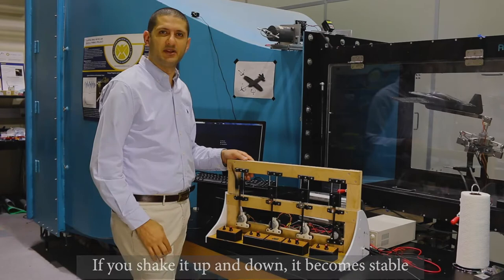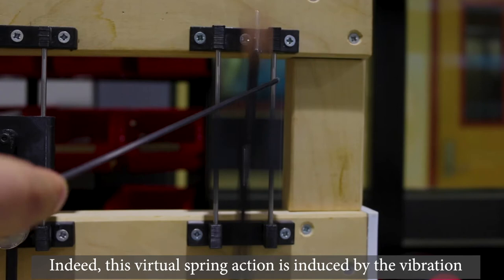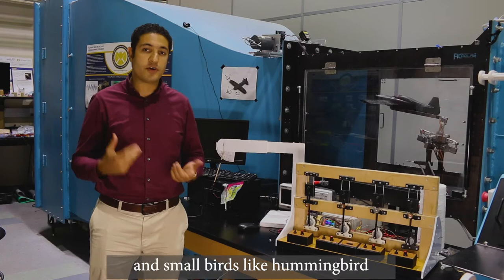Indeed, this virtual spring action is induced by the vibration, which stabilizes the pendulum against gravity. So we found that insects, particularly the large ones like moths and small birds like hummingbirds, exploit the same phenomenon to stabilize their flight dynamics naturally without feedback.